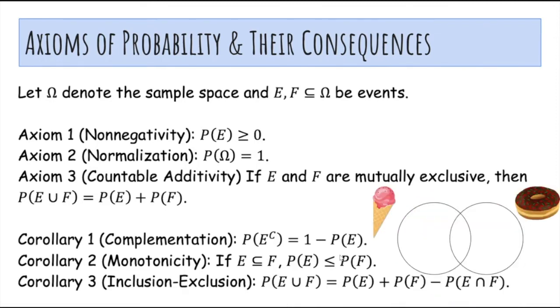The third corollary is inclusion-exclusion, so the probability of E or F is probability of E plus probability of F minus the probability of their intersection. And that makes sense because you have to subtract off the intersection because it was counted twice.